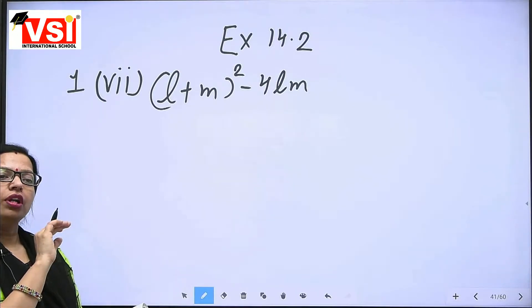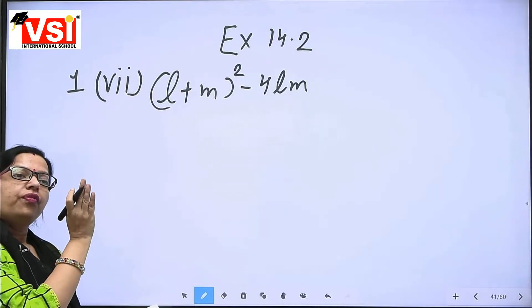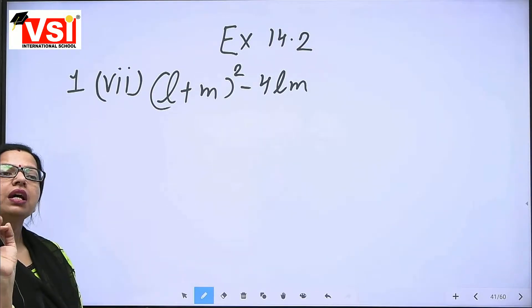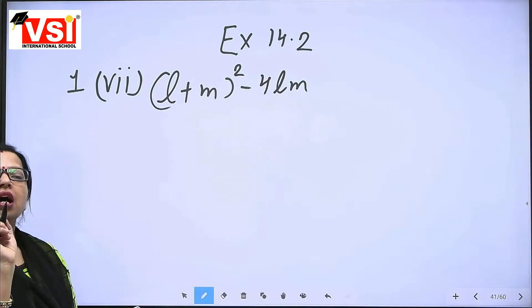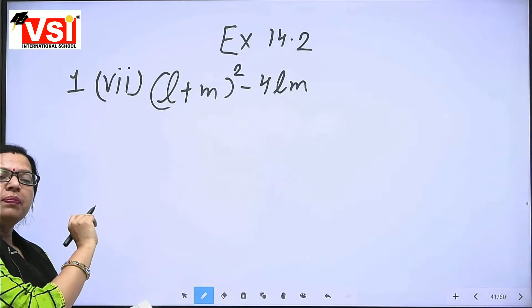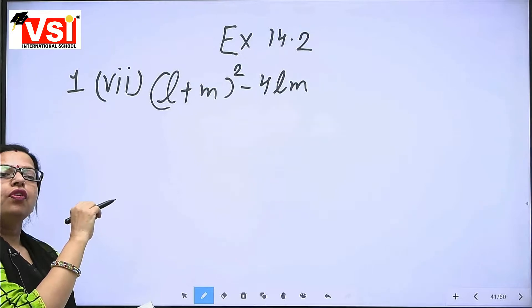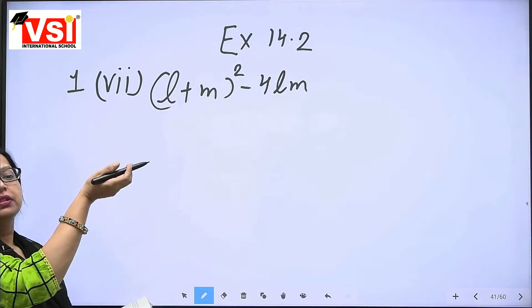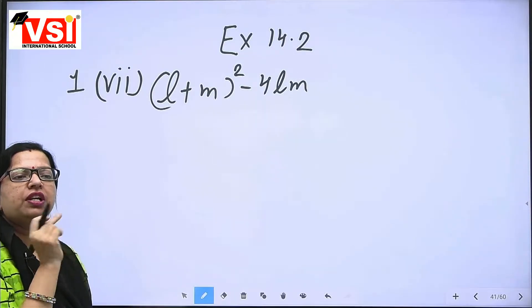According to that, first we did the checking work — for the identities. Here we already have the whole square format. So first of all, we will open that — change the whole square into its expanded form.